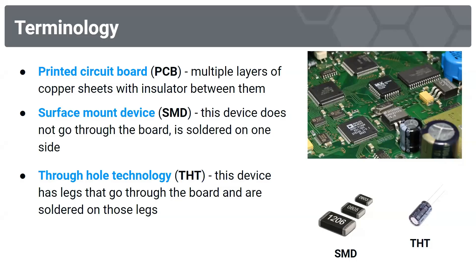Before we get into the PCB design, I'm going to go over some terminology. A printed circuit board, or a PCB, is multiple layers of copper sheets with insulation between them. A surface mount device, or an SMD, is a device that does not go through the board and is soldered on one side. To the right, I've highlighted some examples of SMD components on a PCB.